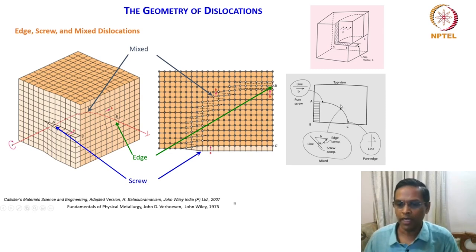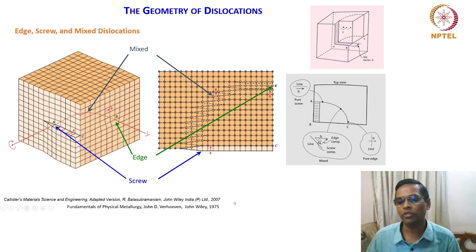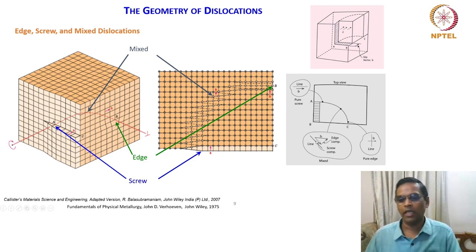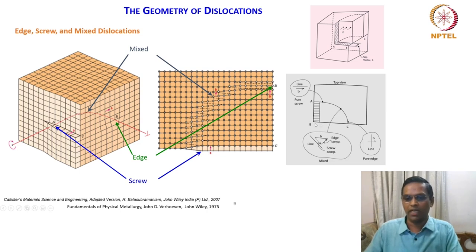For a mixed dislocation, the Burgers vector b has some angular relationship with the dislocation line. Taking the two angular components: if alpha is the angle between b and the dislocation line, then the screw component is b cosα and the edge component is b sinα. A mixed dislocation will have both the characteristics of edge as well as screw dislocation, which can be understood through this angular decomposition.